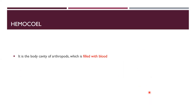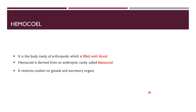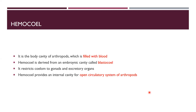The hemocoel is filled with blood. Its embryonic origin is from the blastocoel — a cavity that forms during development. The hemocoel restricts the coelom to the gonads and excretory organs. It serves as the internal cavity for the open circulatory system of arthropods, where the circulatory fluid circulates.